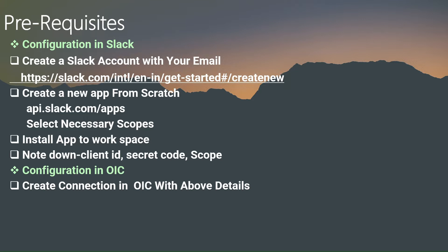After that, you are going to create a new application from scratch. You have to use the URL api.slack.com to create a new application. You have to select the necessary scopes, install the application to workspace, and note down your client ID, secret code, and scope. After that, we can configure those details in the OIC application.